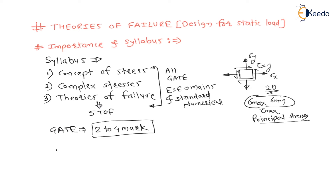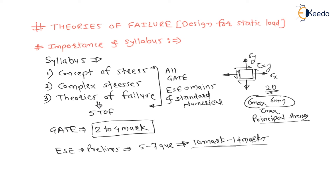For ESC prelims, from this syllabus at least they will ask five to seven questions — that means at least 10 to 14 marks worth of questions, since each question is for two marks. For ESC mains, at least they will ask one question of 10 to 20 marks — sometimes 10 marks, sometimes 15 marks, or sometimes 20 marks.